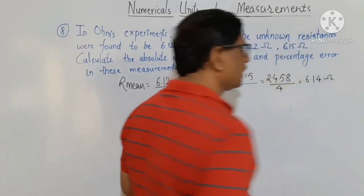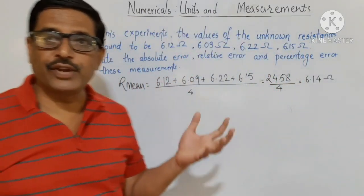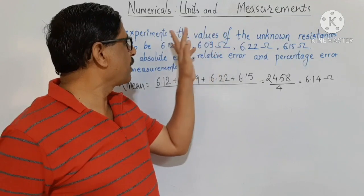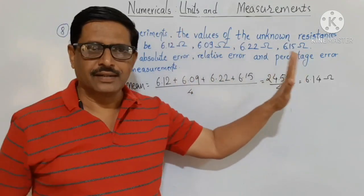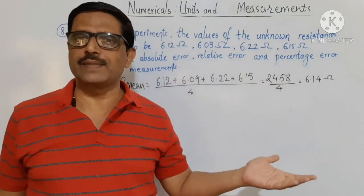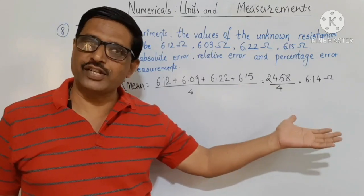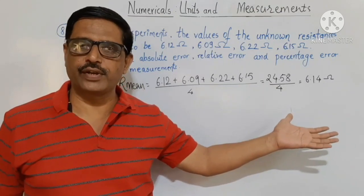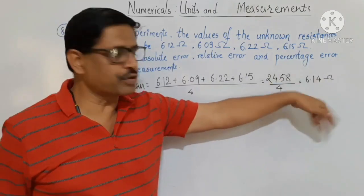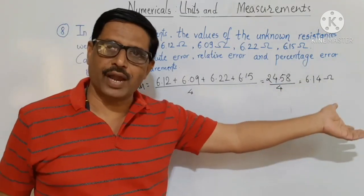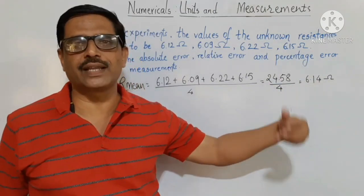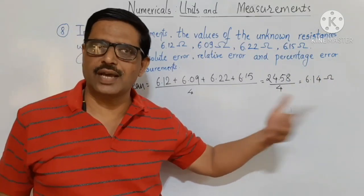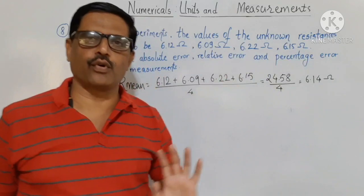We take the result with 3 significant figures, as all measurements have 3 significant figures. The next digit comes out to be 5, so we take the value as 6.14 ohm.